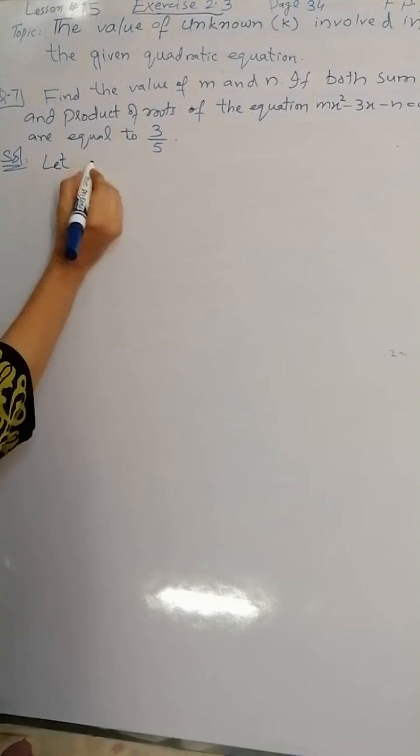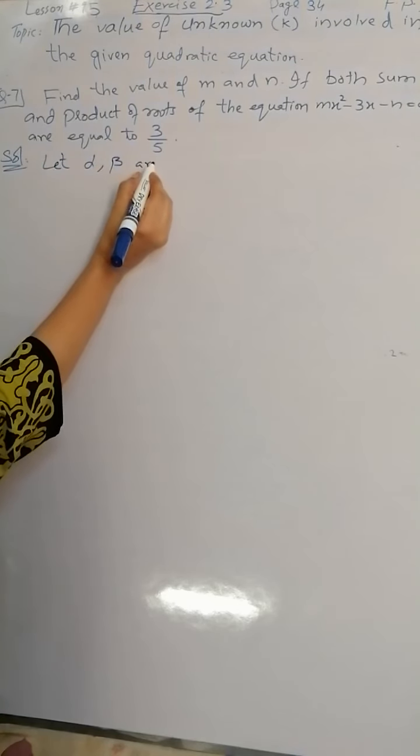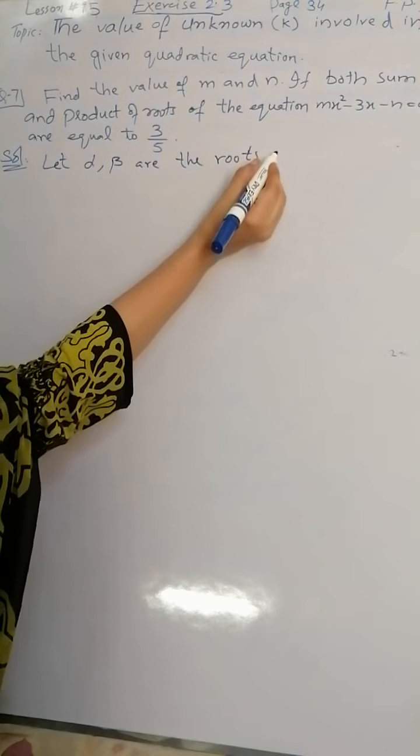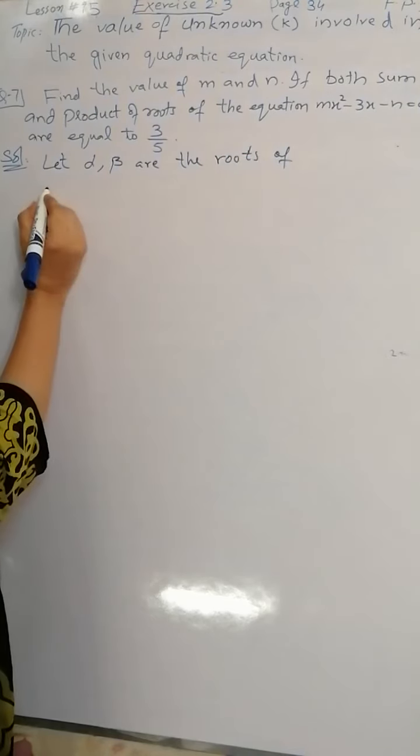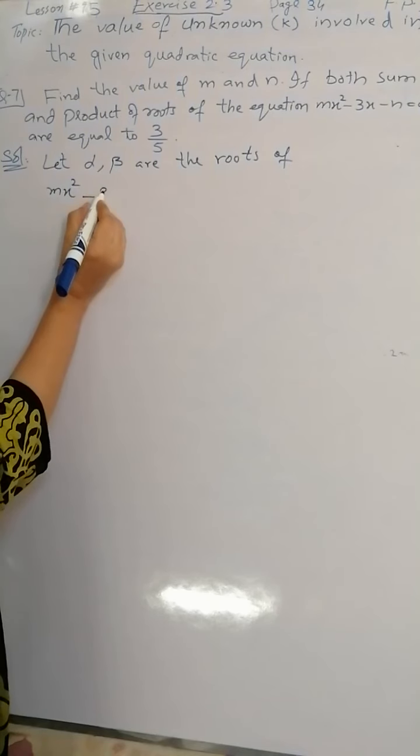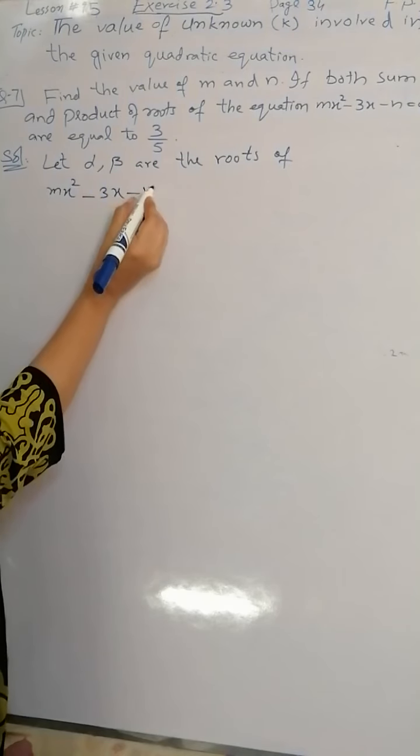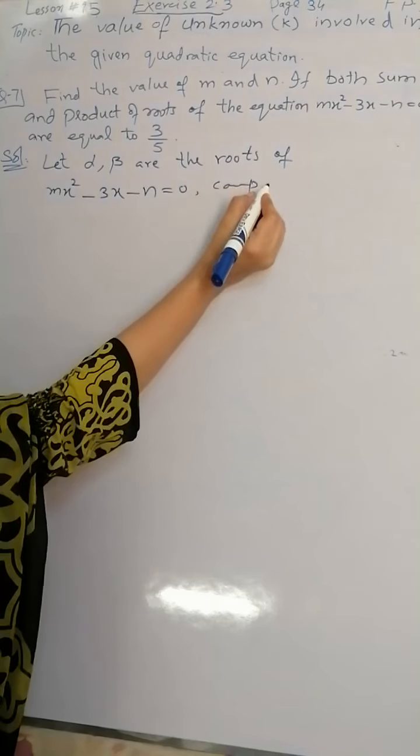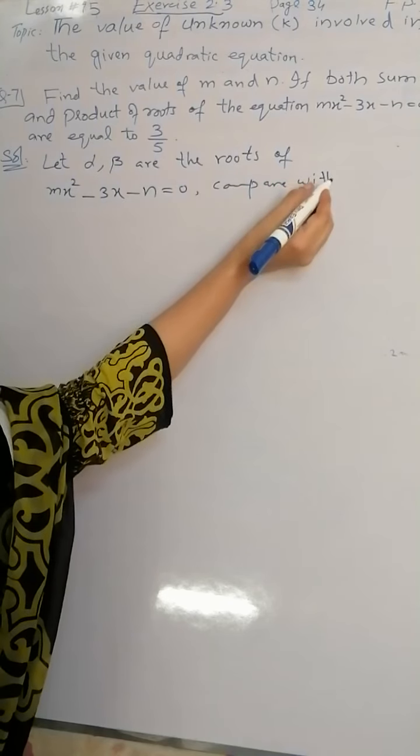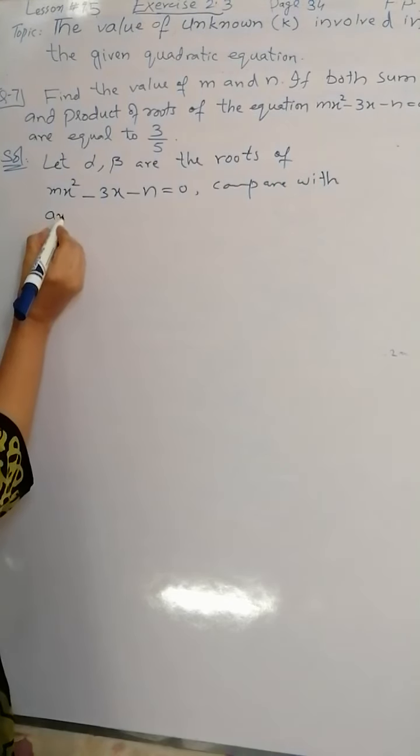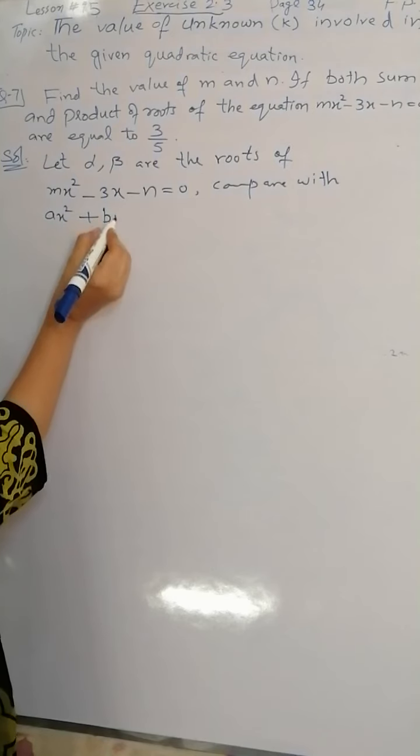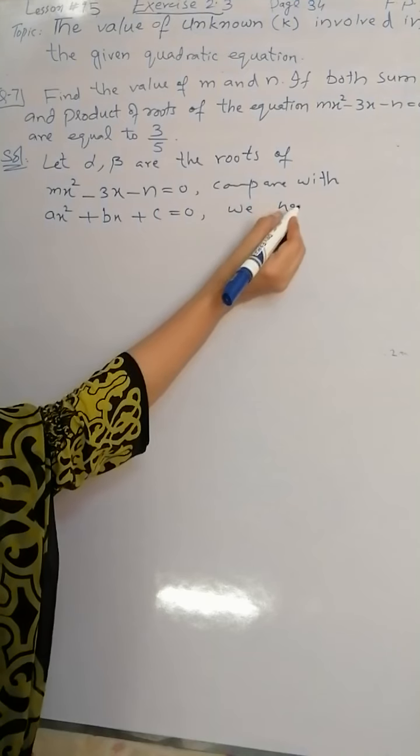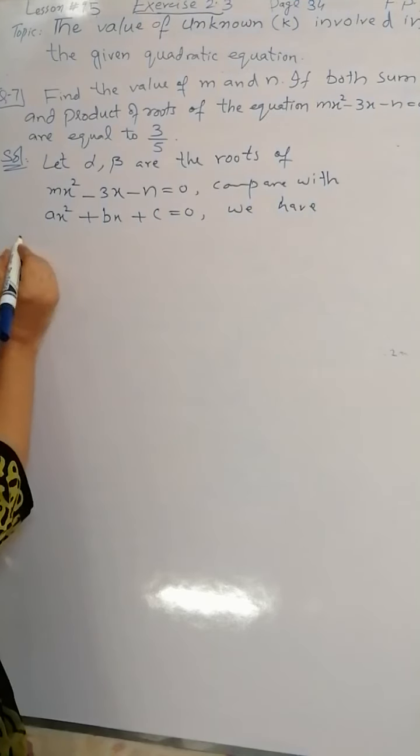We are starting from: let alpha and beta are the roots of the given equation which is mx² - 3x - n = 0. Compare with the general form of quadratic equation, that is ax² + bx + c = 0, so that we have the value of a, b, and c.